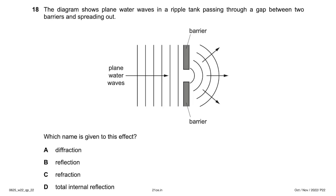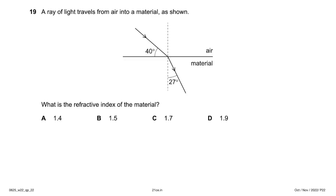The diagram shows plane water waves in a ripple tank passing through a gap between two barriers and spreading out. The name given to this effect is diffraction. Option A is correct.